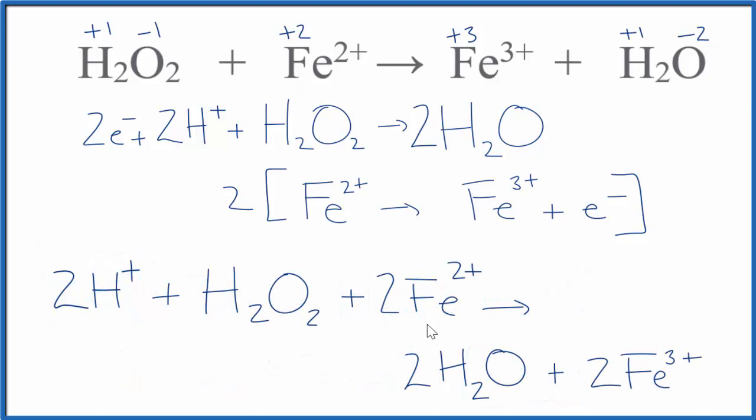So this is the balanced redox reaction for hydrogen peroxide and the iron two ion. Redox reactions are difficult to balance but we can always check our work to know that we've done this correctly.